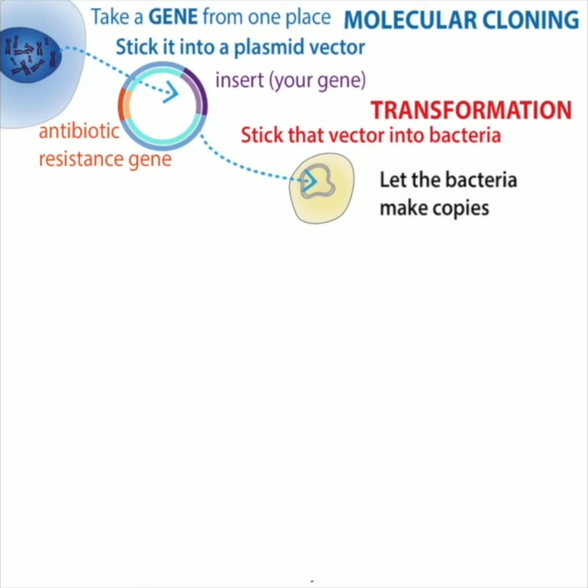The basic idea is that with molecular cloning, you take the genetic recipe for a protein or something you want made, and then you stick it into a circular piece of DNA called a plasmid. This serves as a vector or vehicle for sticking that genetic recipe into bacterial cells in a process called transformation, and then the bacteria will make lots of copies.